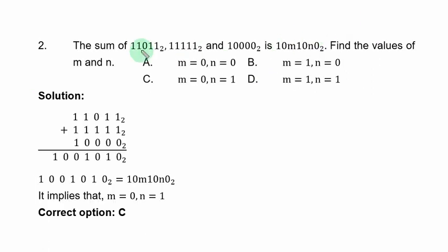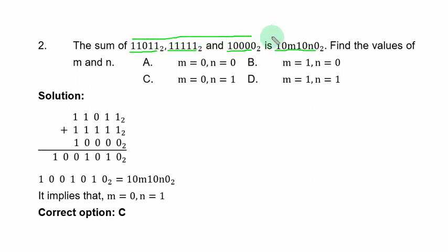Question 2: the sum of 110111 base 2, 111111 base 2, and 100000 base 2 equals 1 0 1 1 m 1 1 0 1 0 1 n 0 0 in base 2. Find the values of m and n. You add these binary numbers and compare the result with the given expression to identify the positions of m and n.